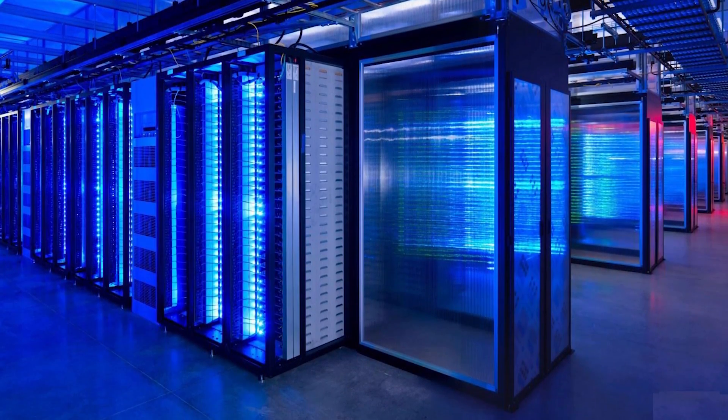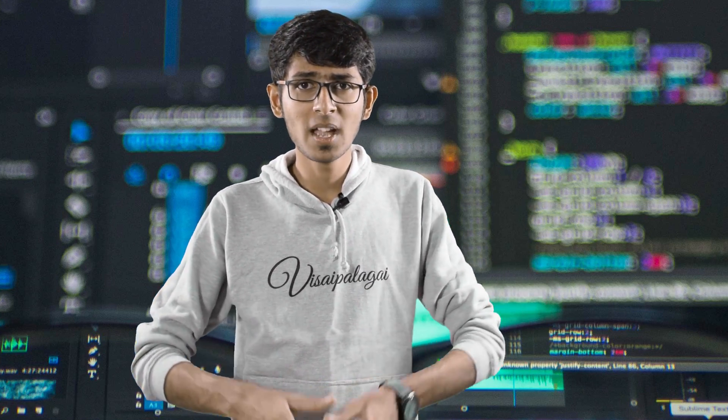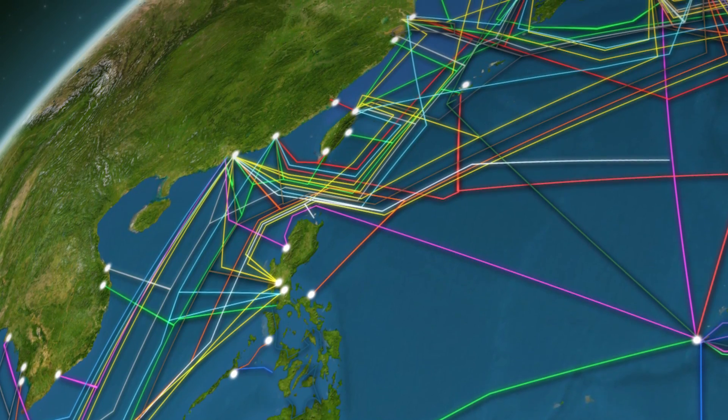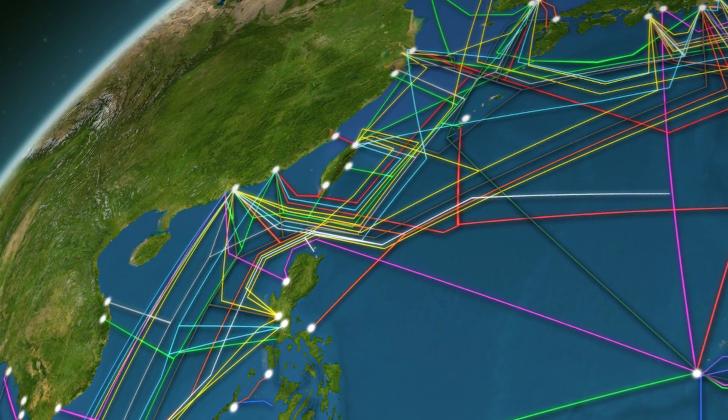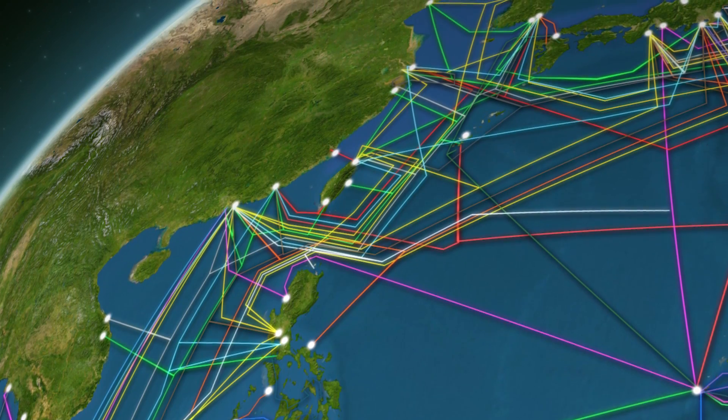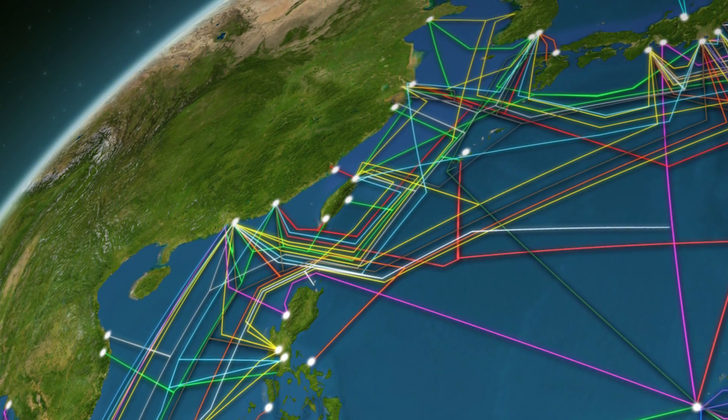The request then reaches the YouTube servers. All the servers are connected through a network using fiber optic cables and other communication cables, along with all the servers and network divisions that make up the global Internet infrastructure.